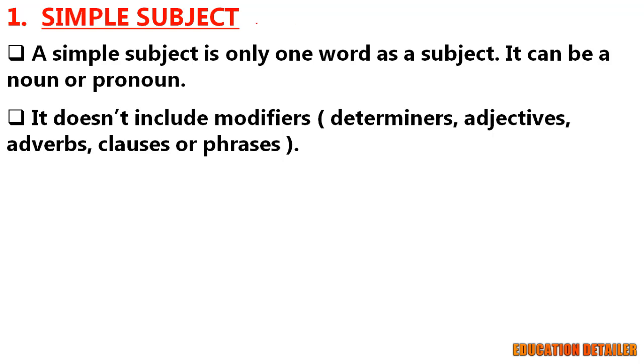First type: simple subject. A simple subject is only one word as a subject. It can be a noun or pronoun. Remember, simple subject does not include modifiers like determiners, adjectives, adverbs, clauses, or phrases.